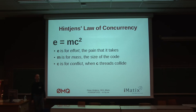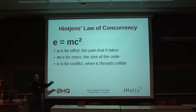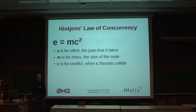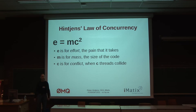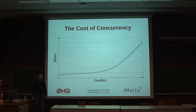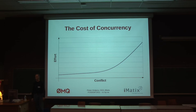So a law about concurrency — I invented this a couple of weeks ago. It's very original: E equals MC squared. The effort that it takes to build a system is a function of the mass — that's the size of the system — times the square of the number of conflicts between parts of the system. Most simple systems, like a tool to do flash programming, there's no conflict. It's one program doing one thing. As we build larger applications, we start having to share information, and the traditional way of doing that is to share data between threads. And we get this curve where the effort goes up exponentially as we get more and more work on the same data.